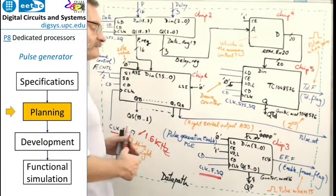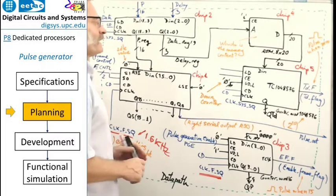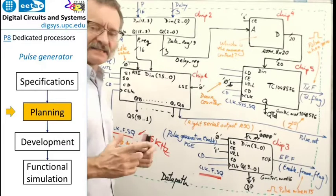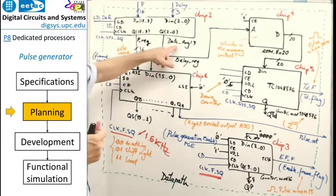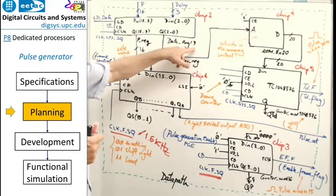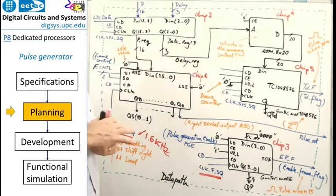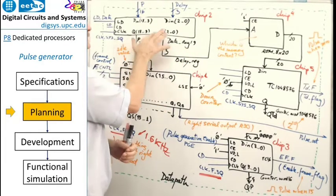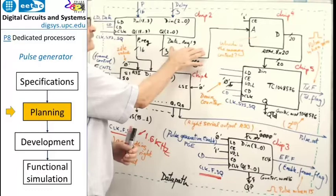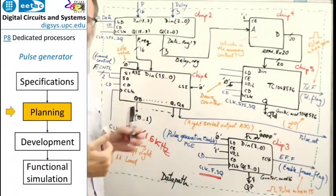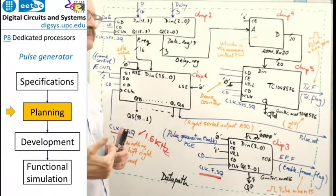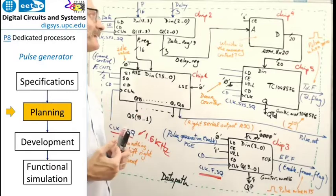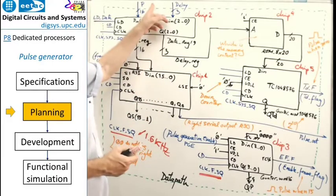Another convenient device is the data register — 19 bits, or a 16-bit register plus a 3-bit register. This is related to the sampling of the data, which includes both the pulse and the delay.